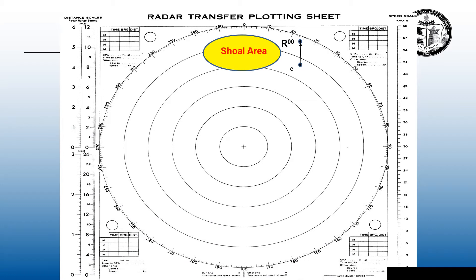I will show the area in front of me, or I want to maneuver against this contact, or maybe my voyage plan says I have to alter course. But E to R is my true course and my true speed, or my own ship's true motion. When you plot your M06 and it lands in the same place E is, it's going to be dead in the water. Since E is zero knots, E never moves. If M is on E, it doesn't move — it has to be dead in the water.